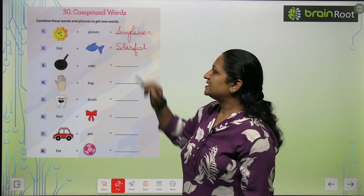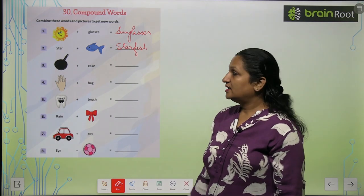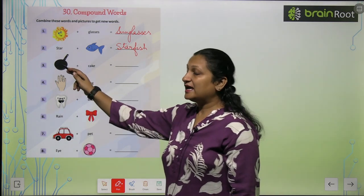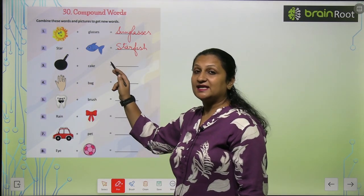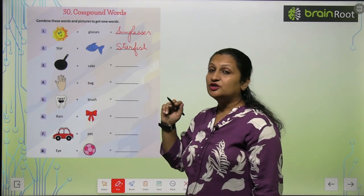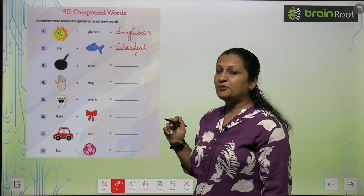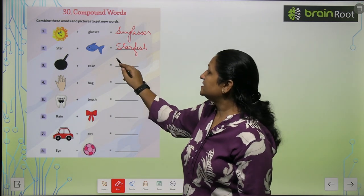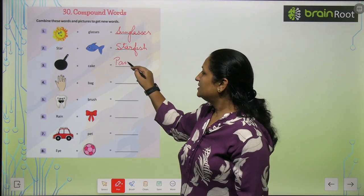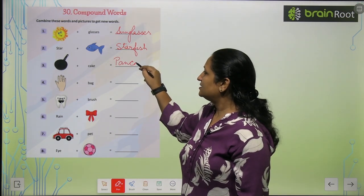See the next one. Yeh hai ek pan, pan ke saath hai cake. Toh kya word form hua? It is pancake.